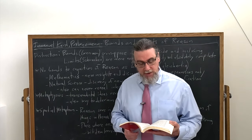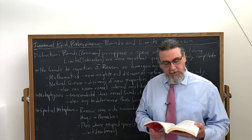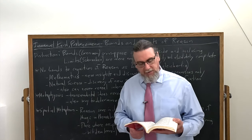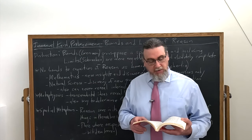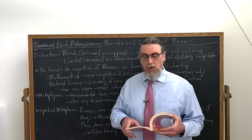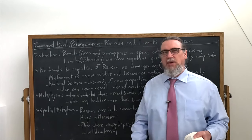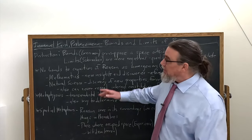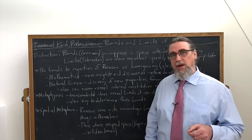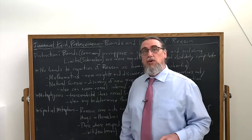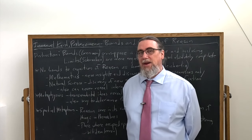He says we can determine the bounds of pure reason. In all bounds, there's something positive. A surface is the boundary of corporeal space, therefore is itself a space. A line is a space which is the boundary of the surface, a point the boundary of the line, yet always a place in space. Whereas limits contain mere negations. So it's not just limits being revealed by these spatial metaphors or through reason engaging with the transcendental ideas in a critical way. We're also getting to figure out what the bounds or boundaries of pure reason actually are in relation to the noumena, to the things in themselves, which we cannot determine but we cannot escape either.